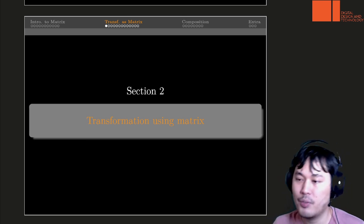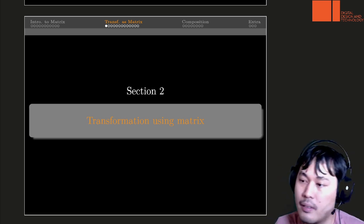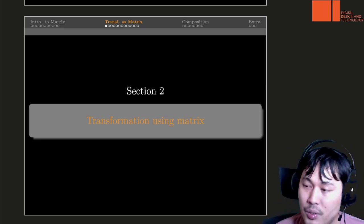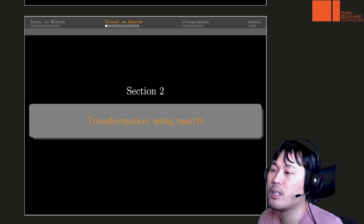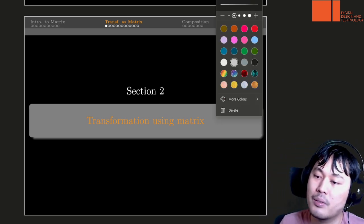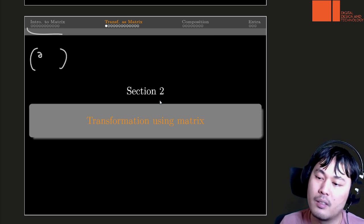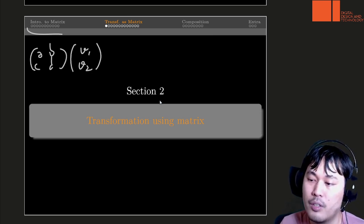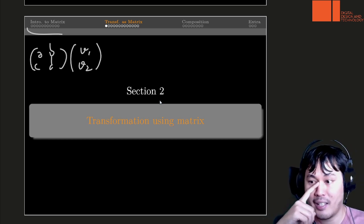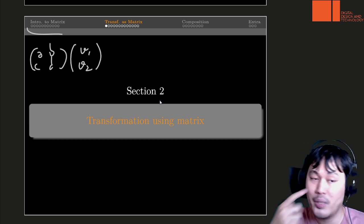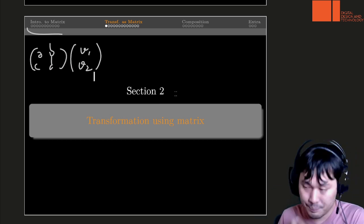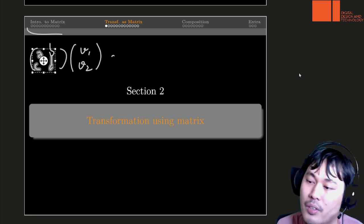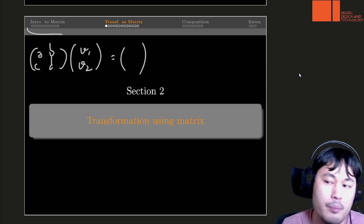Hello! In section 2, we're going to learn how we can describe or correlate transformations using matrix operations. Last time we learned about matrix operations where you can multiply a matrix ABCD to a vector, let's say v1 and v2. But we didn't actually say much about why we do it that way. Here we're going to see how we can think of the result of this multiplication as a transformation.